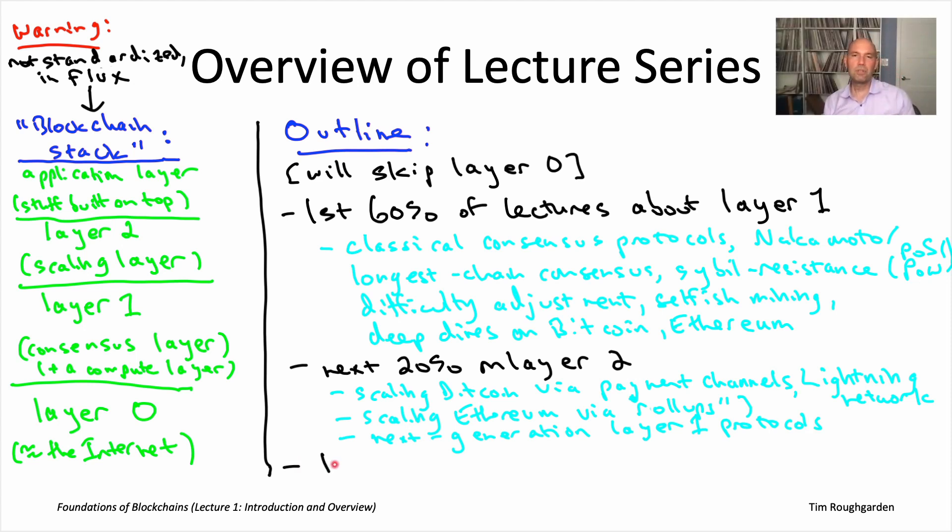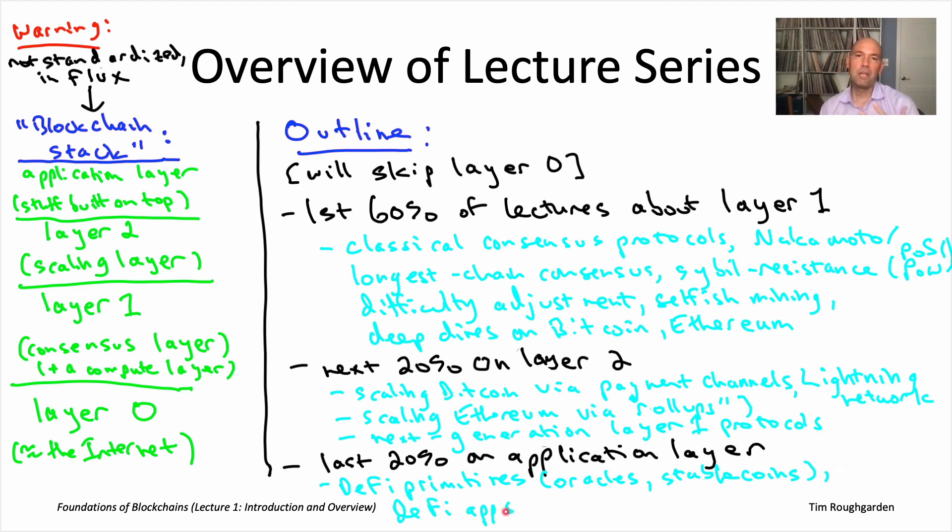And for the last 20% or so, the last five lectures or so, that's when we'll talk about the application layer. So the application layer, we'll focus mostly on DeFi, which stands for decentralized finance. That's where a lot of the action has been so far, and especially over the past year, year and a half. So we'll talk a little bit about some of the key primitives in DeFi, specifically the design of pricing oracles and stable coins. And we'll also discuss some of the major platforms that have been built on top of that, for example, borrowing, lending, and trading via automated market makers.